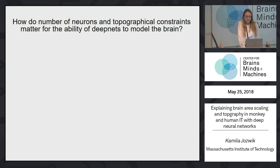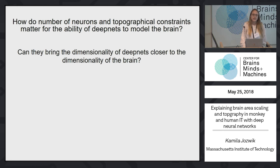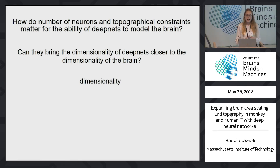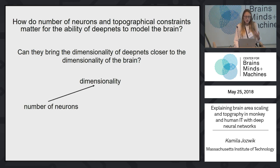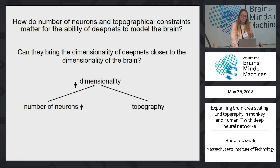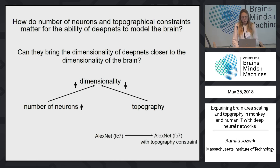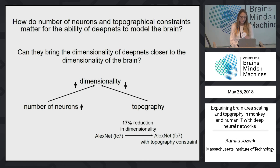The question is: do the number of neurons and topographical constraints really matter for deep net representations? Can they bring the dimensionality of the deep net closer to the dimensionality of the brain? Dimensionality is an important property — we have many neurons in the brain but a lot of them are redundant, and we have many cells in the retina but only several color dimensions. More neurons should increase dimensionality, while topography should bring dimensionality down. My preliminary results show a 17% reduction in dimensionality when comparing AlexNet layer 7 to AlexNet with the topographical constraint — consistent with what we expected.